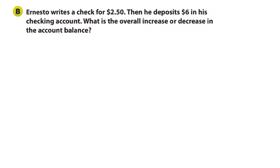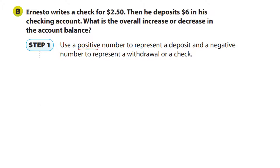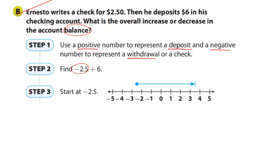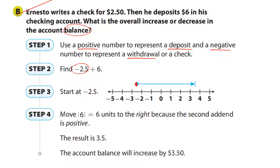Ernesto writes a check for $2.50 and deposits $6.00 in his checking account — what's the overall increase or decrease in balance? A positive number represents a deposit (putting money in) and a negative number represents a withdrawal (taking money out). Writing the check is negative $2.50 and the deposit is positive $6.00. We start at negative 2.5 on the number line.